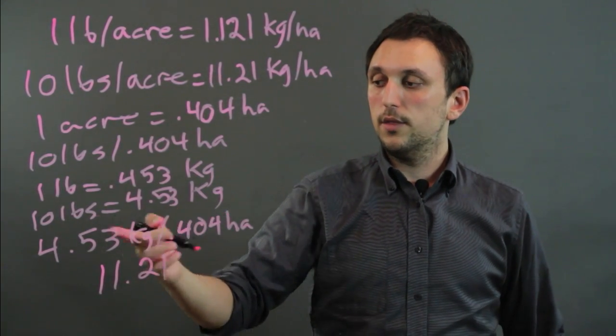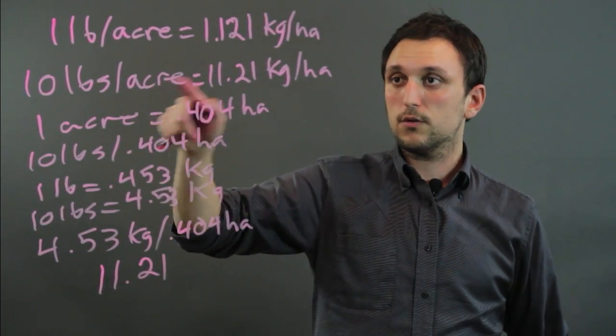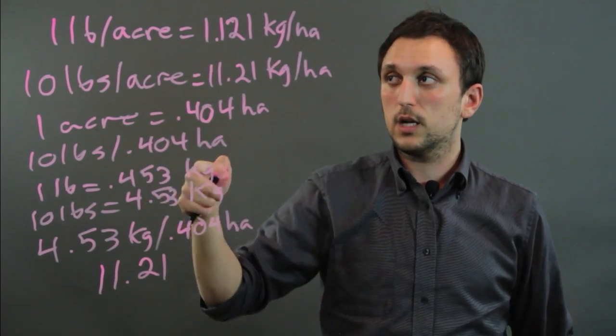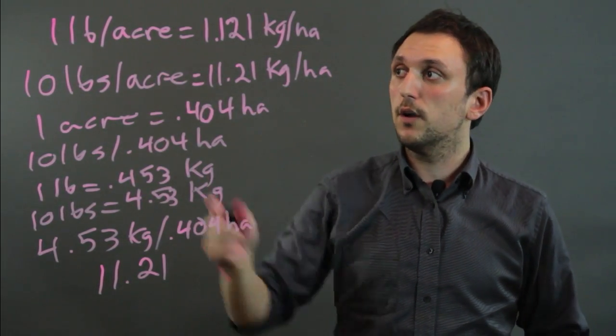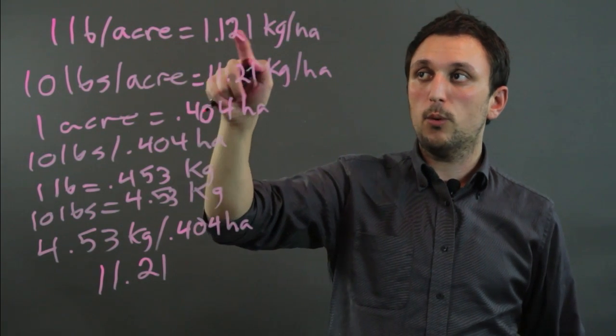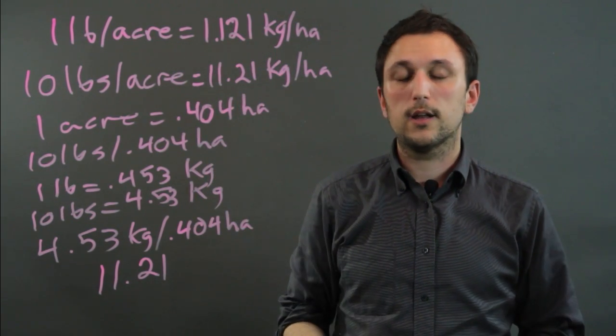So this is how you would convert it. You change your acres into hectares. You change your pounds into kilograms. Or you can remember this basic conversion: for every pound per acre there's 1.21 kilograms per hectare.